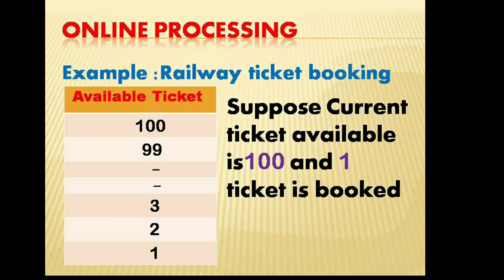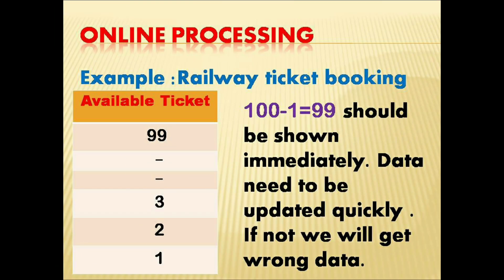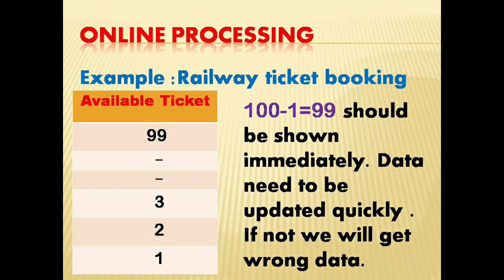Starting from the beginning, let's take the example of railway ticket booking. Suppose the current number of tickets available is 100. If one ticket is booked, then in the railway ticket booking database it should show 100 minus 1, that is 99, immediately.